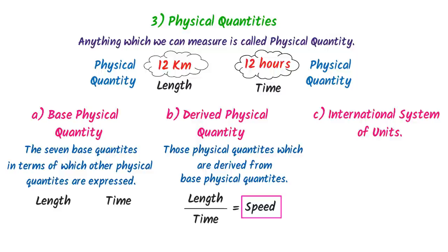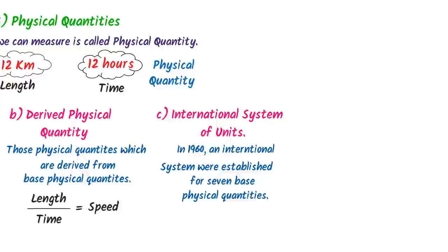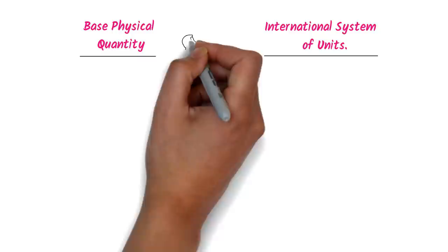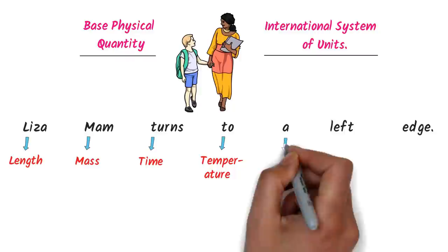In 1960, an international system of units was established for the seven base physical quantities. To remember base physical quantities and their SI units, I use the trick: 'Lisa Mem turns to a left edge.' L stands for length, M for mass, T for time, another T for temperature, A for amount of substance, L for light intensity, and E for electric current.